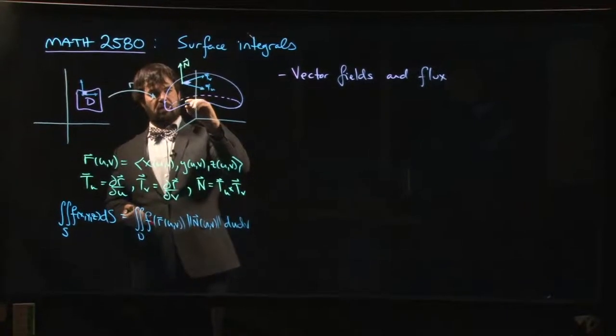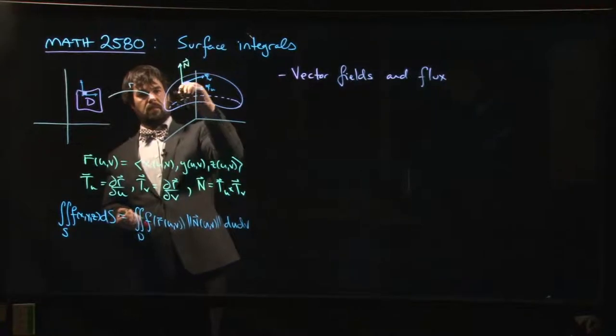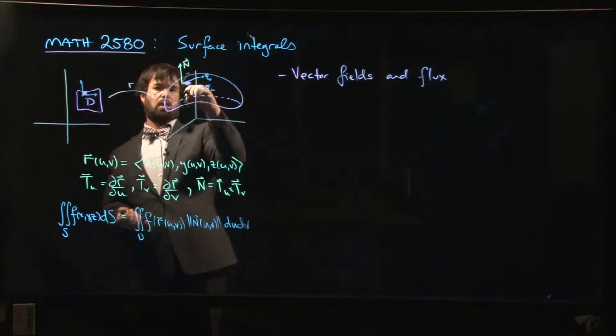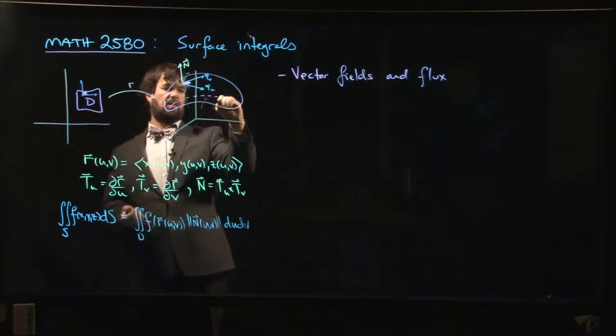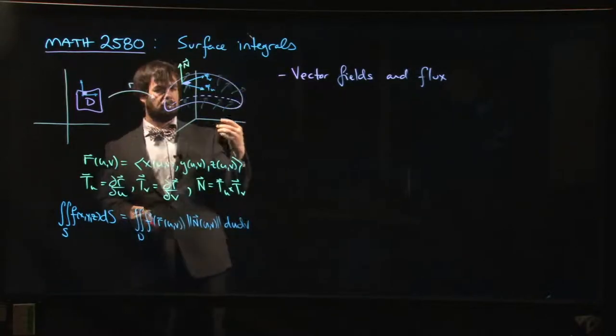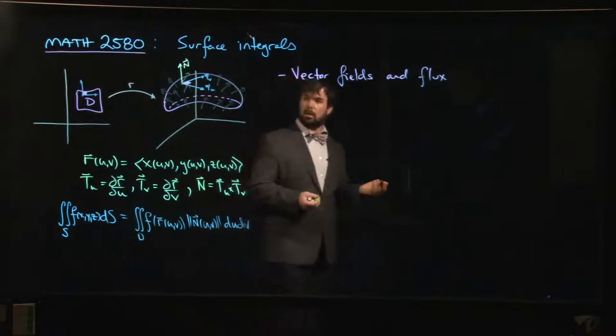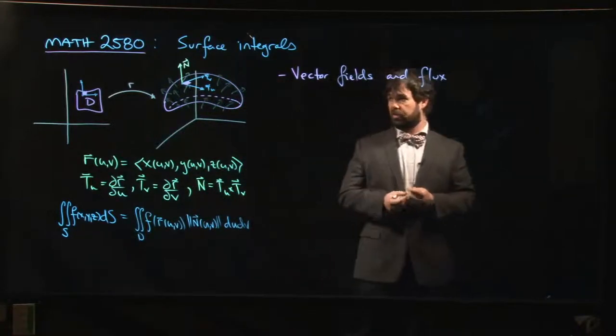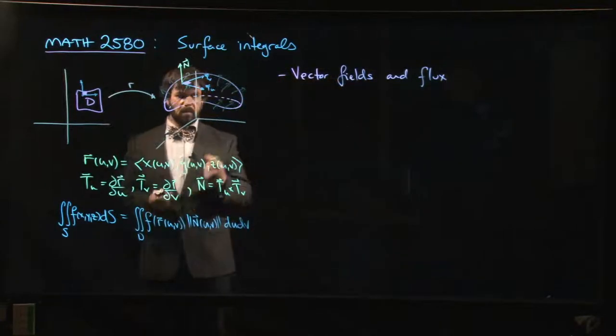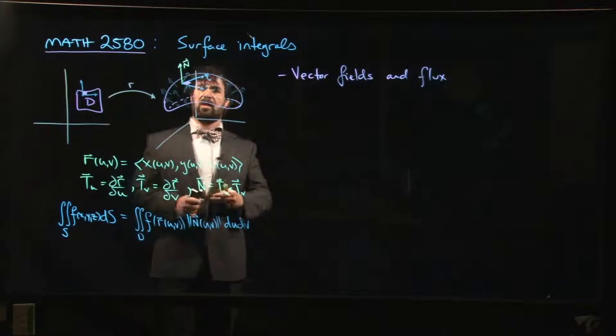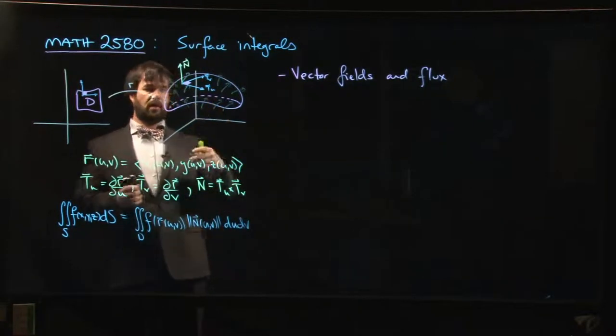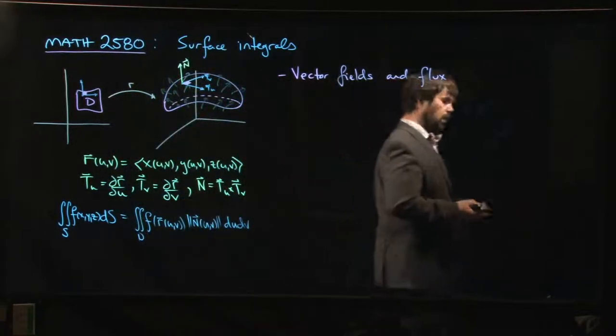Everywhere in space you've got vectors. Those vectors maybe represent an electric field, the gravity field, or maybe the flow of some fluid. Flux is this measure of how much is flowing across your surface.